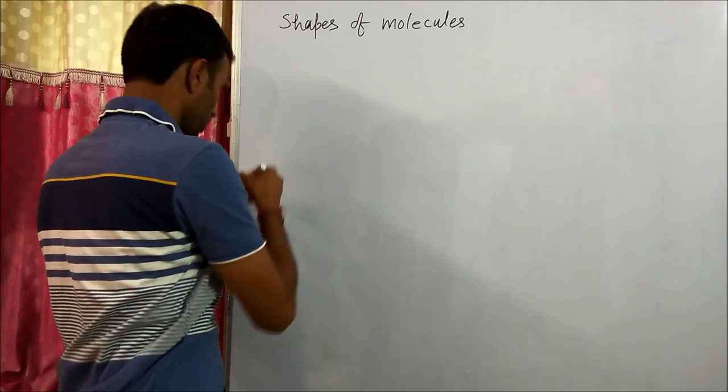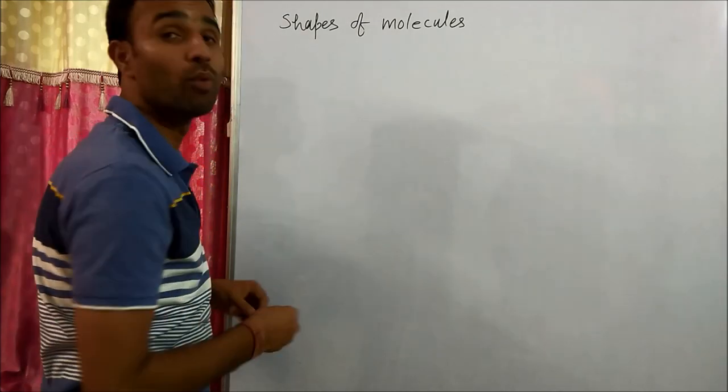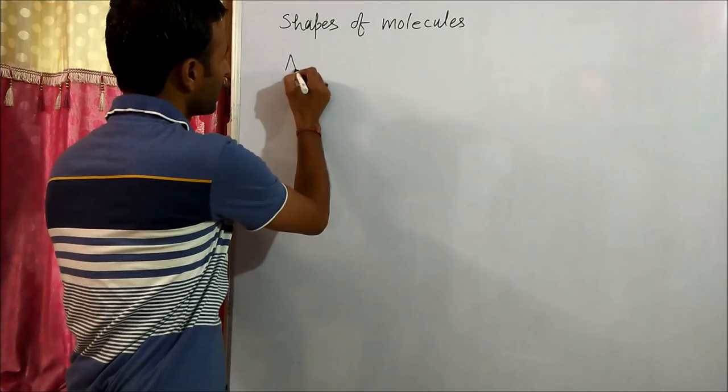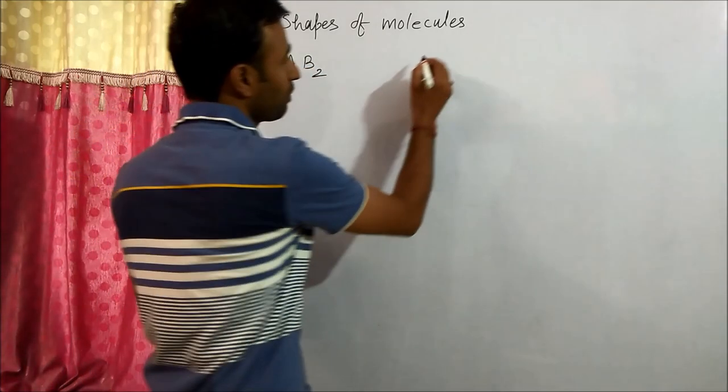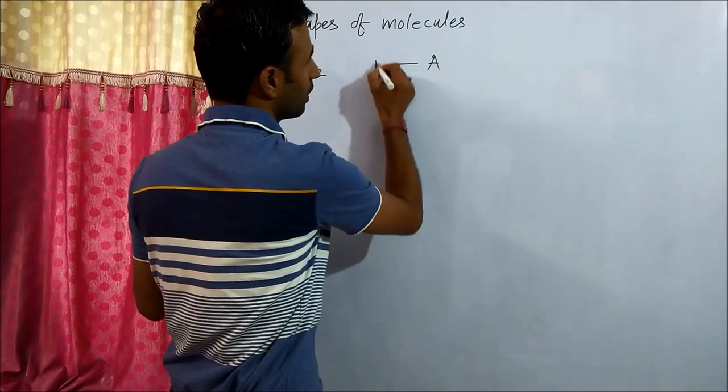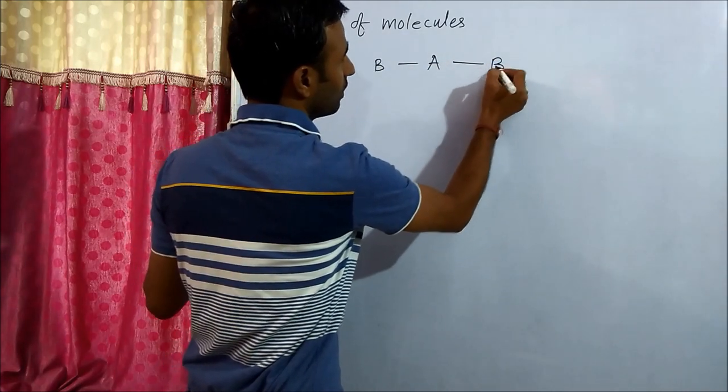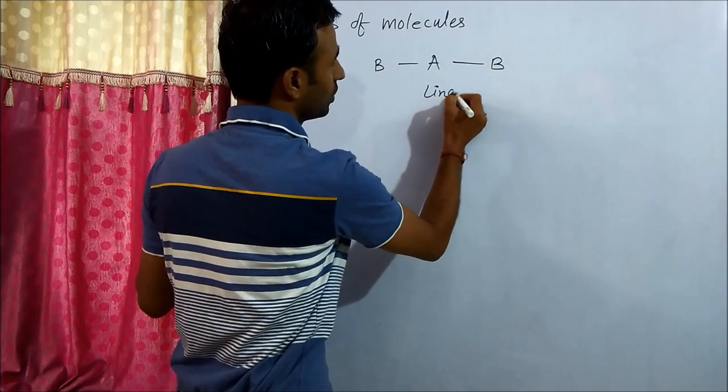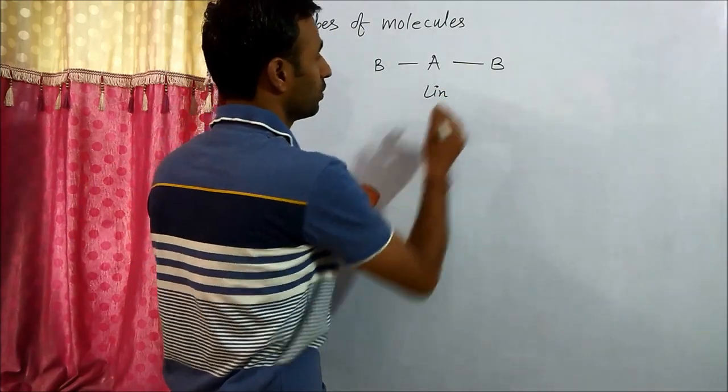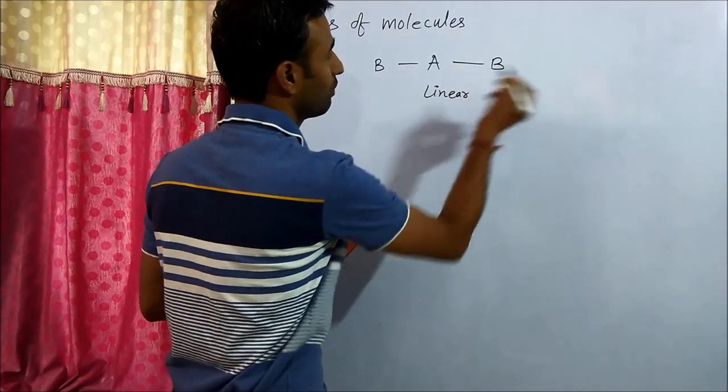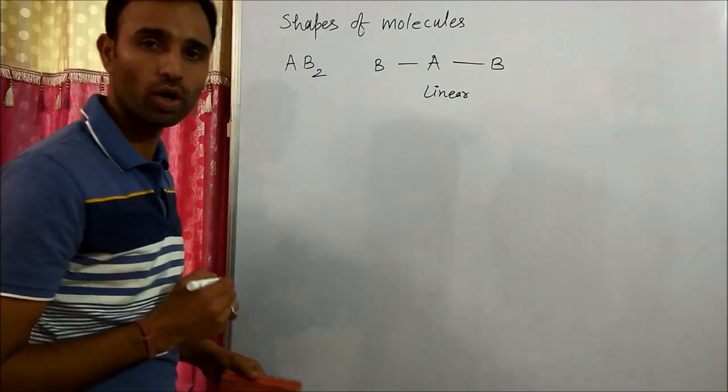For example, if a molecule has two bond pairs, central atom along with two bond pairs, then shape of the molecule is linear. This is basic shape of a molecule. The shape of the molecule is linear when we have two bond pairs.